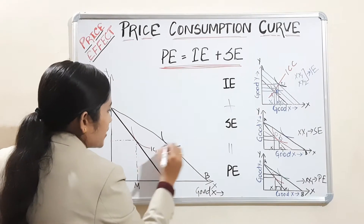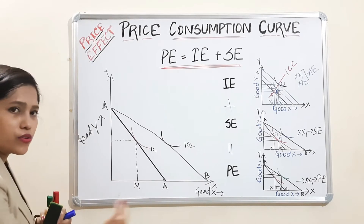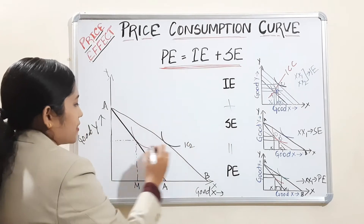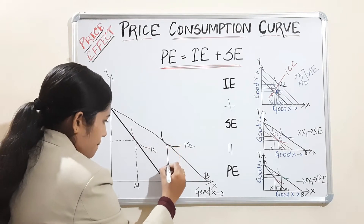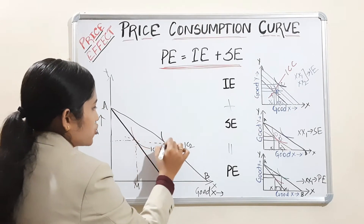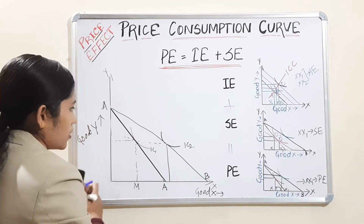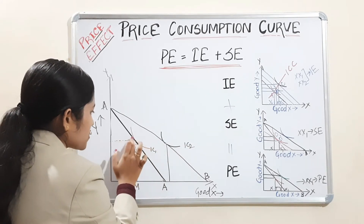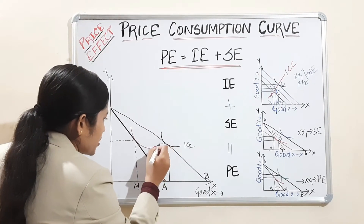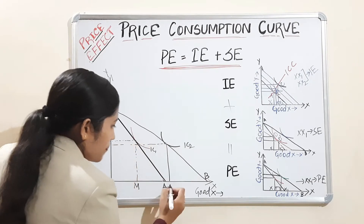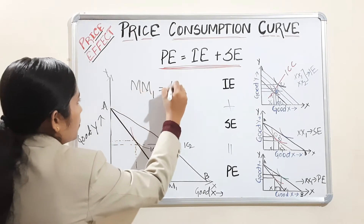Now we will consume at a new point on IC2. If we keep decreasing the price of good X, the budget line rotates further outward, and joining these points gives rise to the price consumption curve. However, we are not concerned with the price consumption curve right now — we want to understand how price effect equals income effect plus substitution effect.